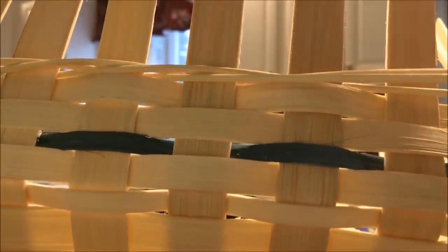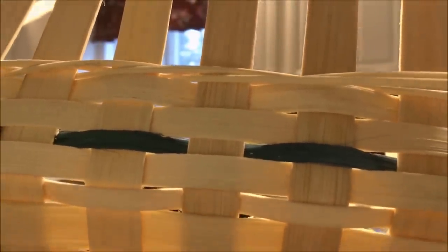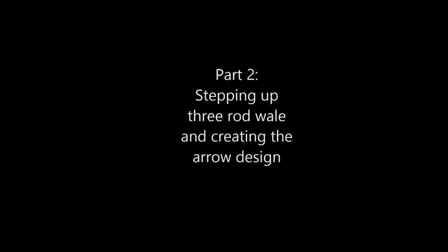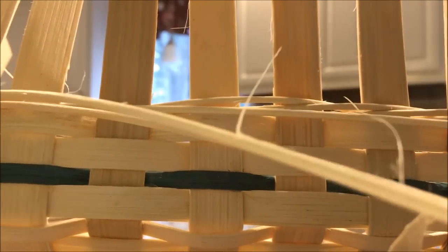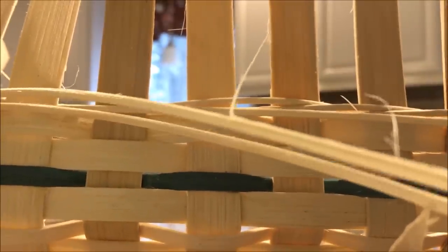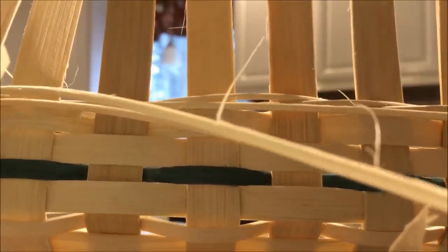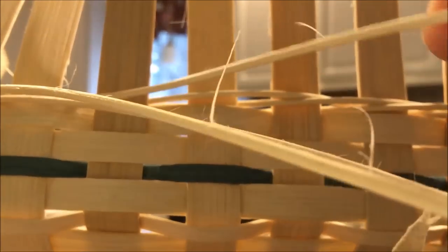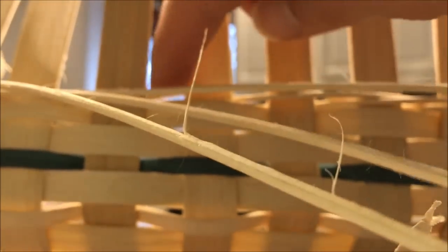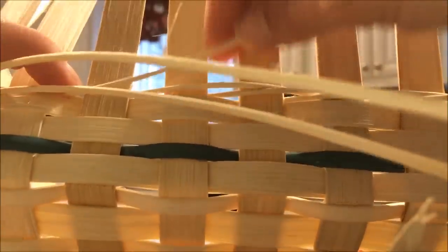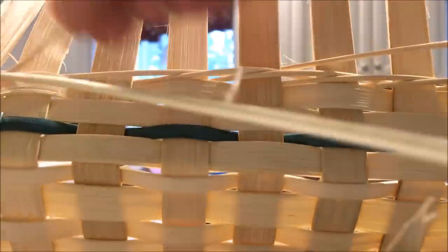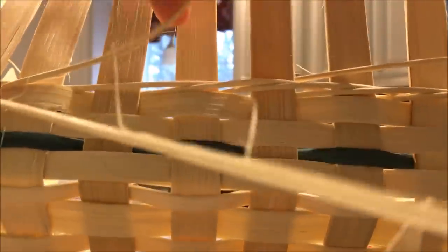Now we're back at the end after doing one row of the triple twining. We're going to do a step up before we start the arrow. To do this step up, you just stop in the space before the last space you started. Instead of working with the left, you're going to start with the right weaver. Again, you're going to go over two, behind one and out. Now take this right weaver over two, behind one and out.